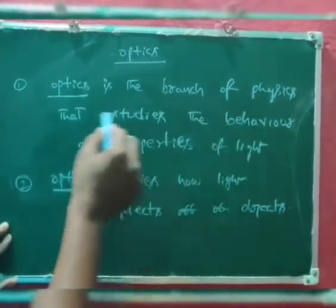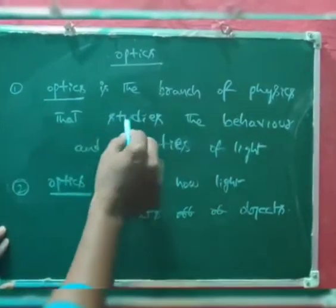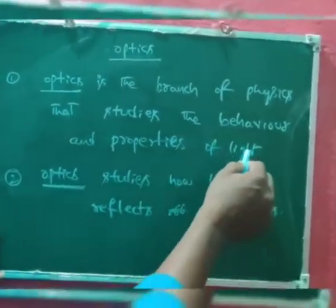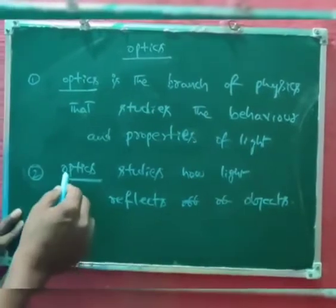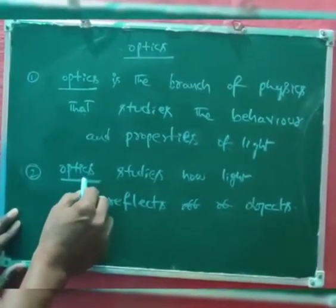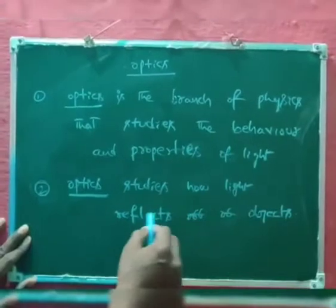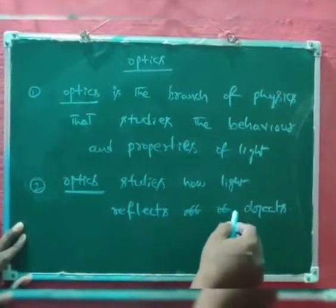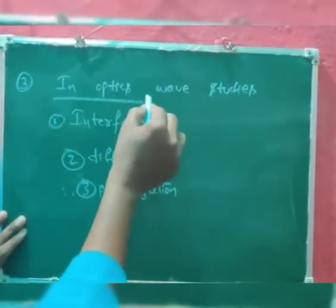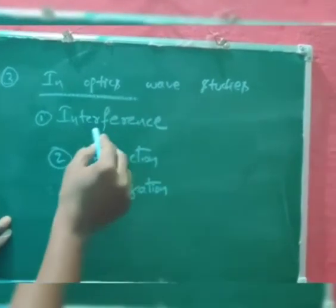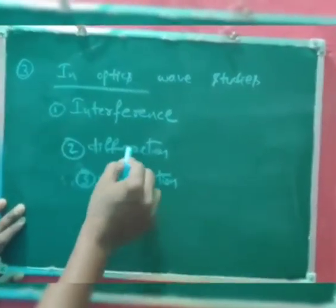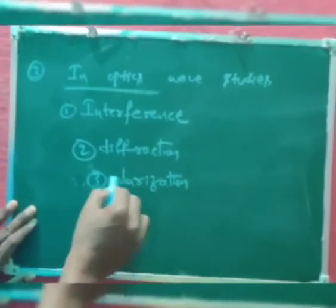Optics is the branch of physics that studies the behavior and properties of light. Optics studies how light reflects off of objects. In optics, wave studies: one, interference; second, diffraction; third, polarization.